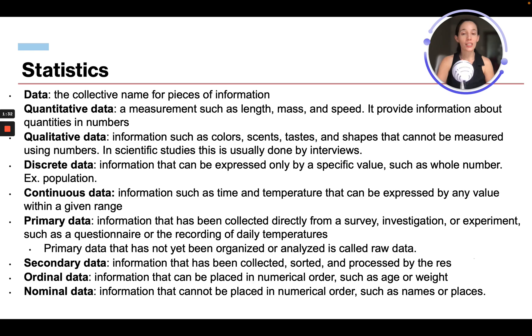And secondary data is information that has been collected, sorted, and processed by the researcher. Ordinal data is information that can be placed in numerical order, such as age or weight. And nominal data is information that cannot be placed in numerical order, such as names or places.